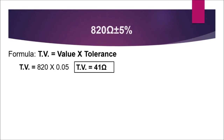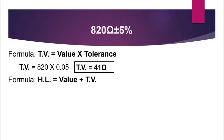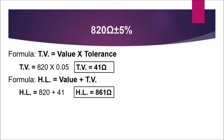So the tolerance value is equal to 41 ohms, which means you need to add and subtract 41 ohms to the value of 820 ohms. The formula for the higher limit is: value plus the tolerance value. So 820 plus 41 is equal to 861 ohms.